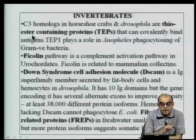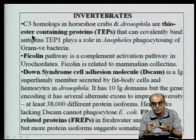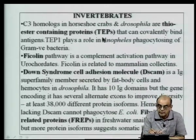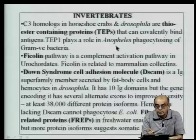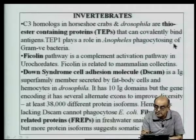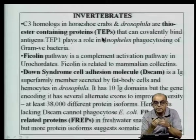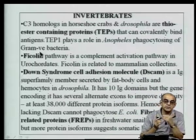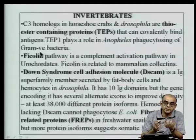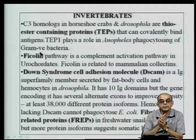These thioester bond-containing proteins are called TEPs. TEP1 plays a role in anopheles, where cells phagocytose gram-negative bacteria. TEP1 binds covalently to incoming pathogens and plays a role in phagocytosis of gram-negative bacteria — something similar to opsonization found in higher mammals, where macrophages are activated to pathogens coated with complement components.